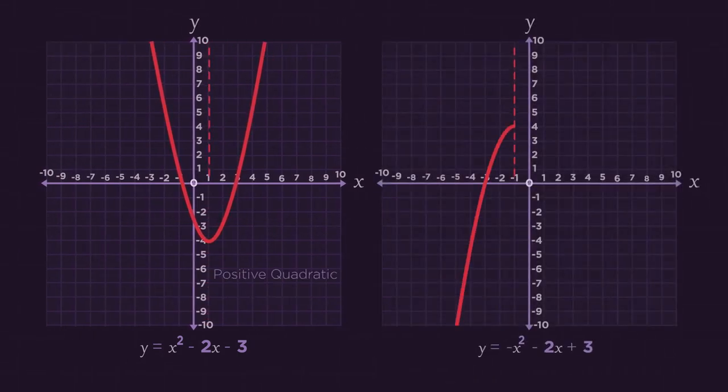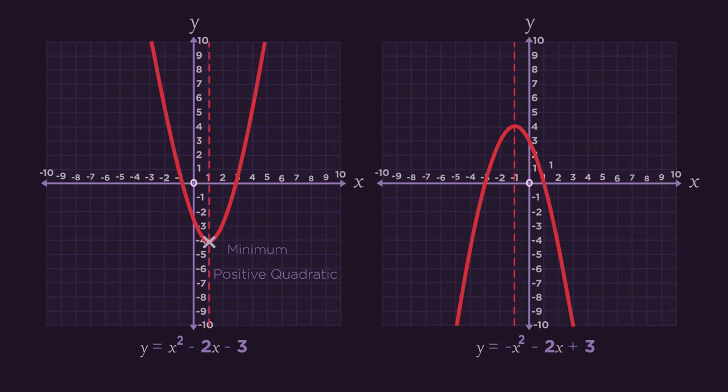In a positive quadratic the turning point is a minimum. It's the lowest point of the function. And in a negative quadratic the turning point is a maximum. It's the highest point of the function.